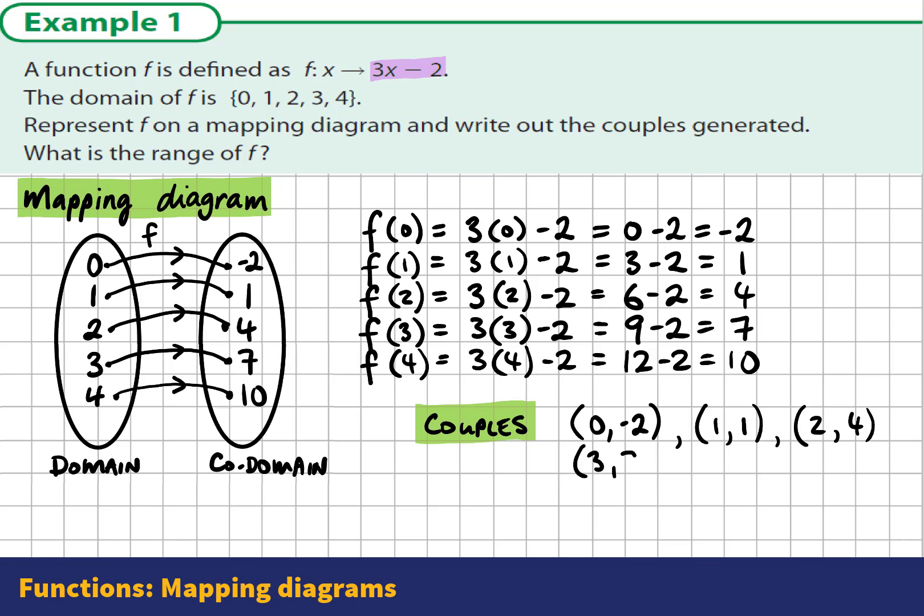Input 3, the output is 7. And input 4, the output is 10. So these are the 5 couples generated.